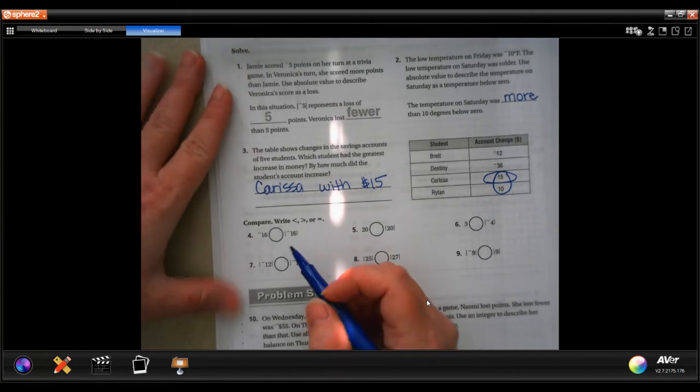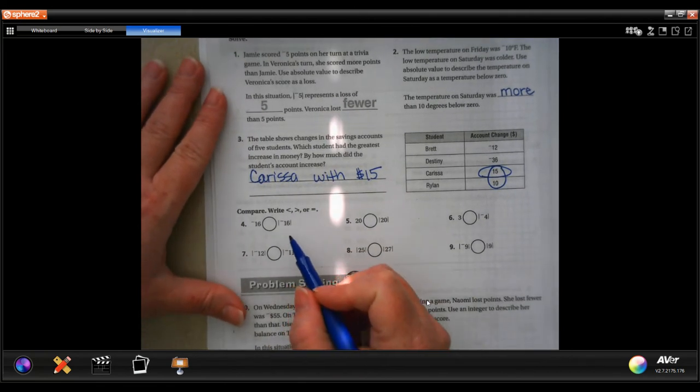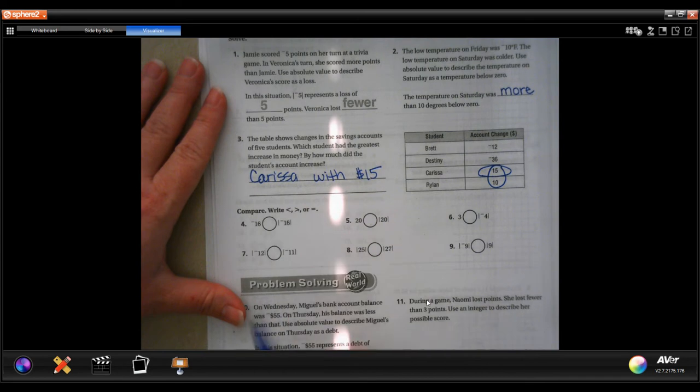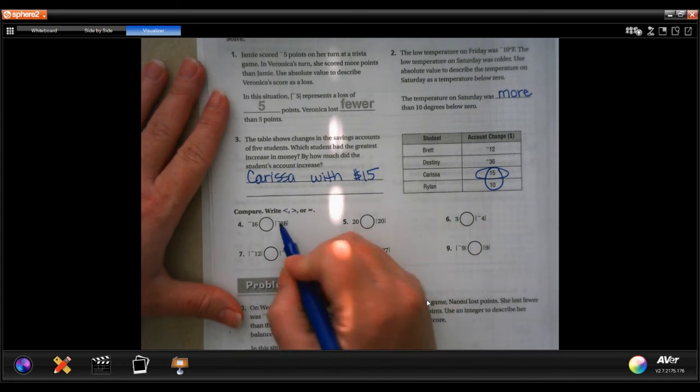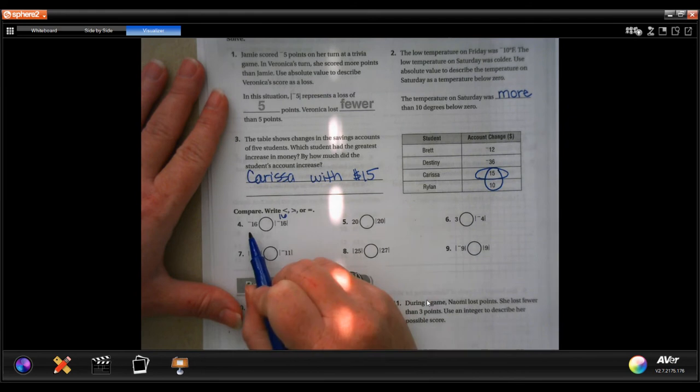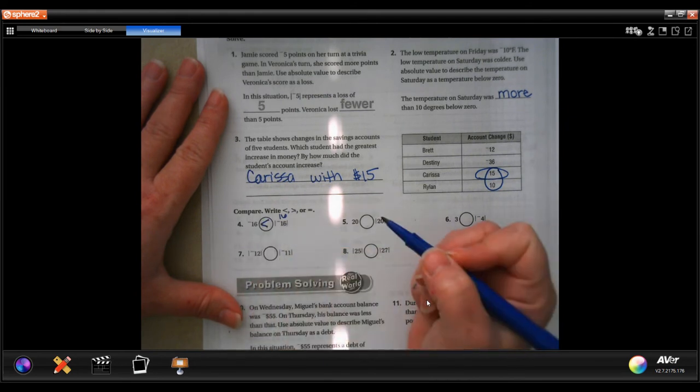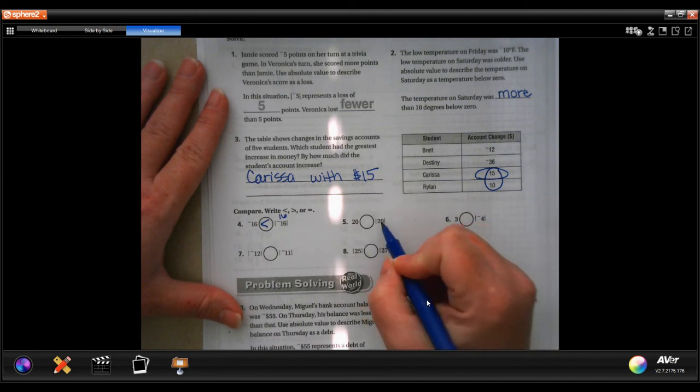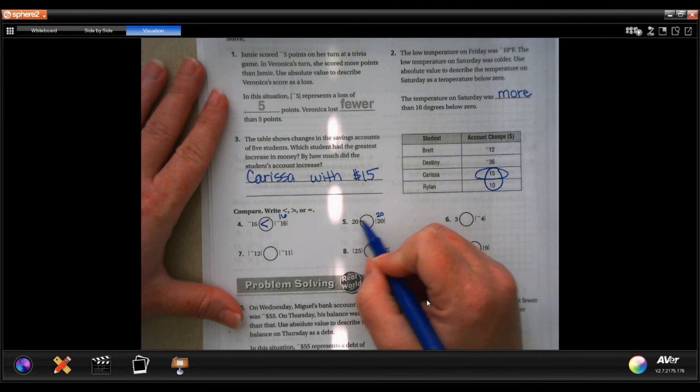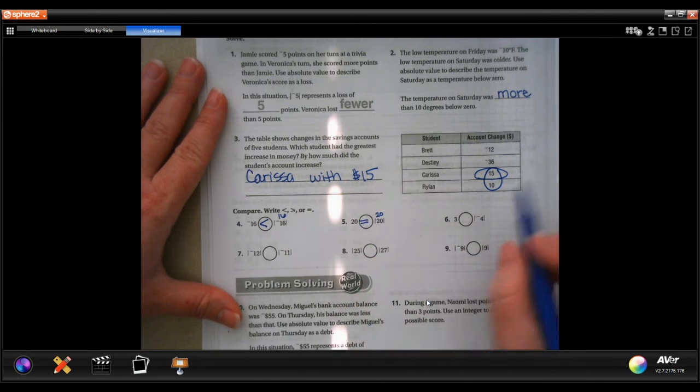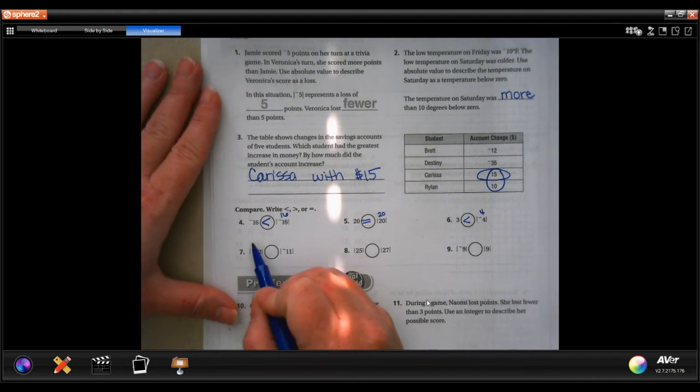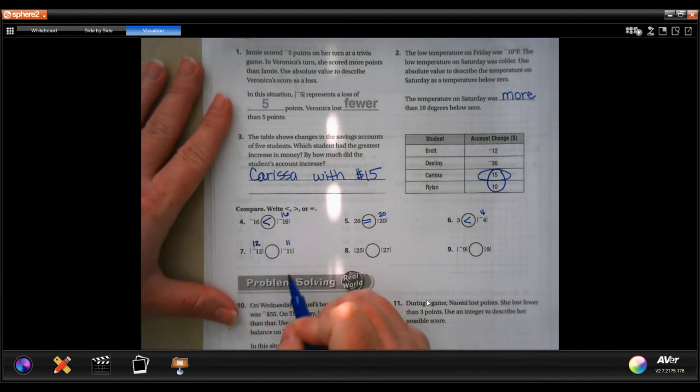We are comparing them. Whenever you see these two lines outside of it, it means the absolute value. So the absolute value of negative 16 is just 16. So is negative 16 more or 16 more? Well, 16 is more. Absolute value of 20 is 20, so 20 or 20, equal. Absolute value of negative 4 is just 4, so 3 or 4? Four. Absolute value of negative 12 is just 12. Absolute value of negative 11 is 11. 12 is bigger.